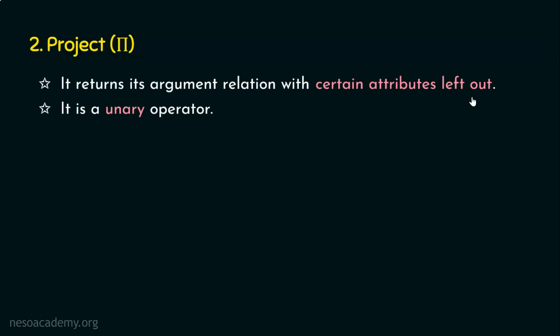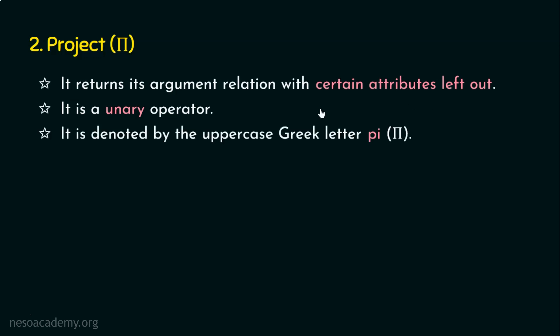The select operator is denoted by the lowercase Greek letter sigma. Project is denoted by the uppercase Greek letter pi. A useful shortcut: sigma starts with 'S' and select starts with 'S', so select means sigma. Likewise, pi starts with 'P' and project starts with 'P', so pi is used for denoting the project operation.